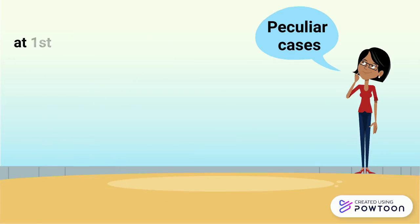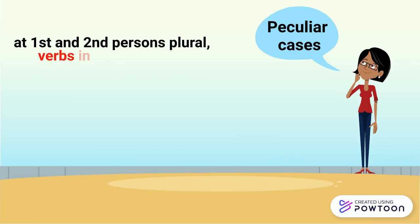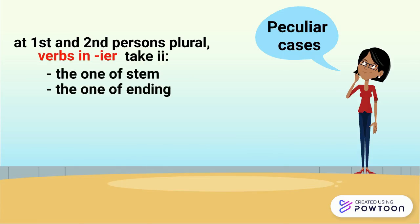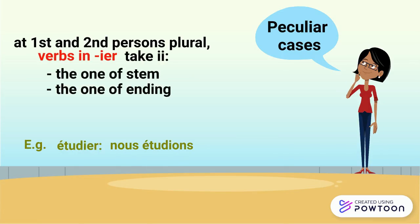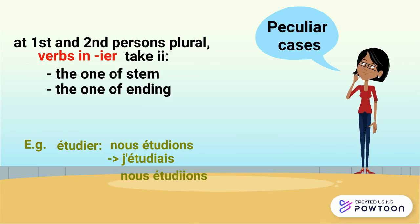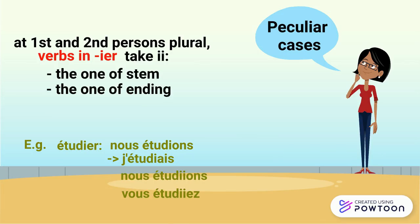Verbs in -IER take two I's: the one of the stem and the one of the ending. For instance, étudier: nous étudions → j'étudiais with one I. But nous étudiions, vous étudiiez with two I's. The pronunciation is similar to the present.